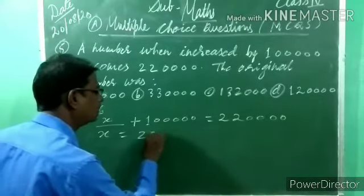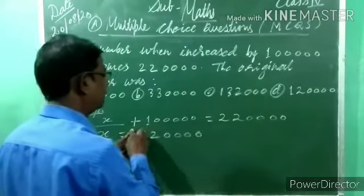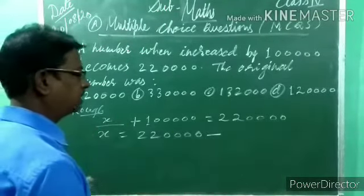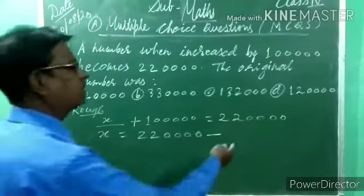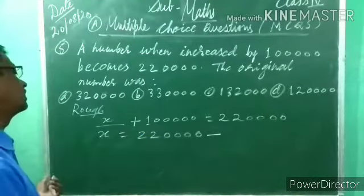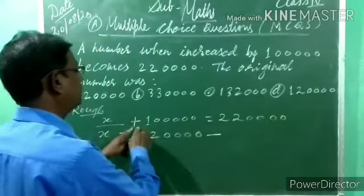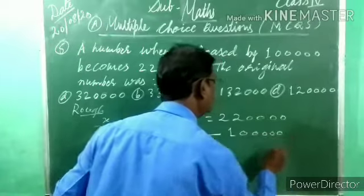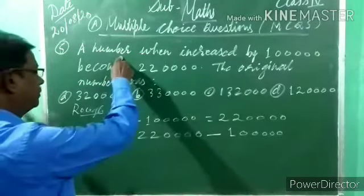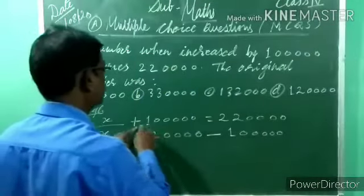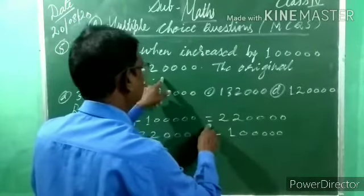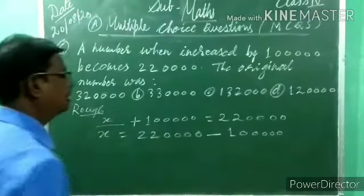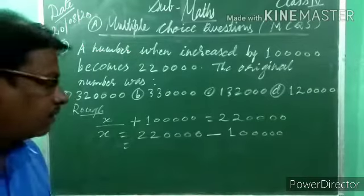So x = 2,20,000 − 1,00,000. When a number moves from one side of the equation to the other, its sign changes — plus becomes minus. So we subtract one lakh from two lakh twenty thousand.